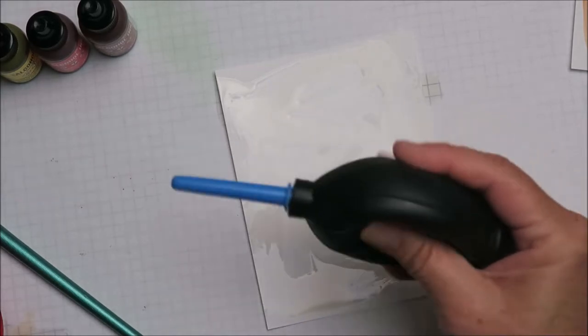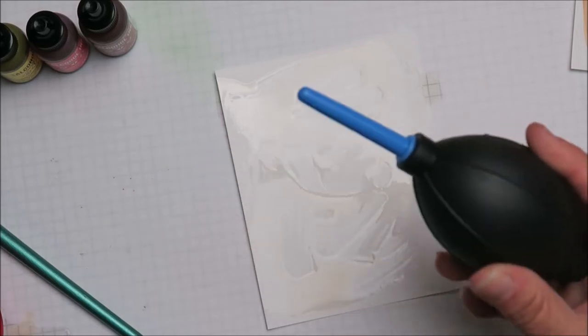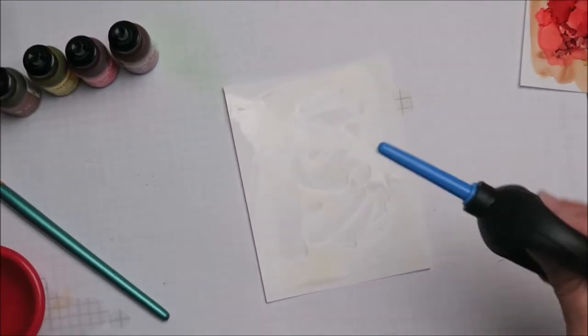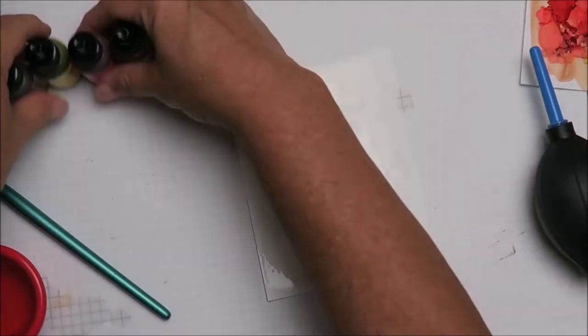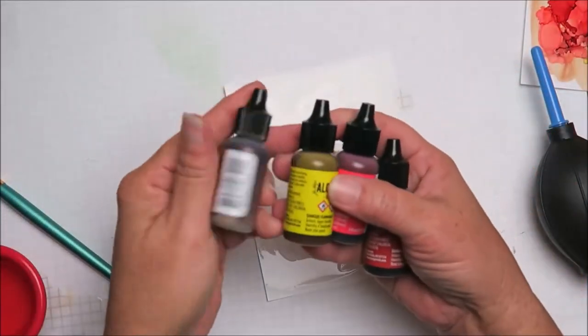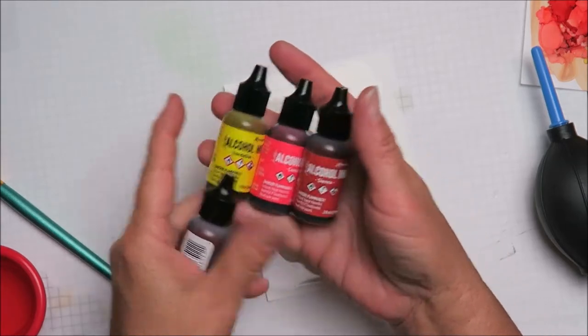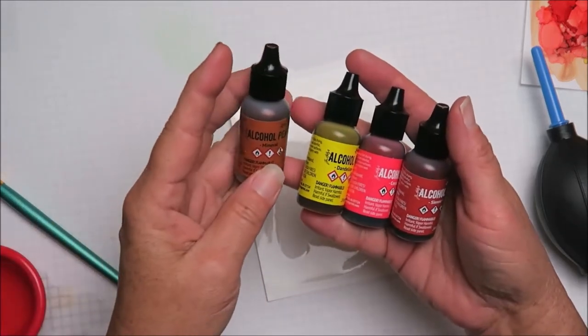Then we have one of these puffer things. Let me just zoom out a little. One of these puffer things, and then some alcohol inks. So I'm using dandelion, coral, and sienna, and then I also have this alcohol pearl called mineral.